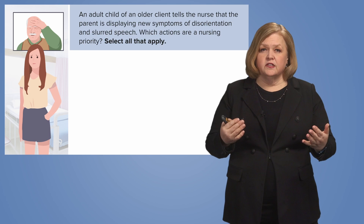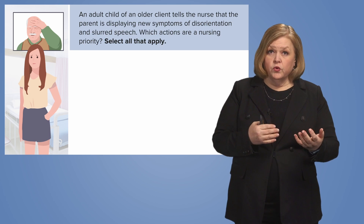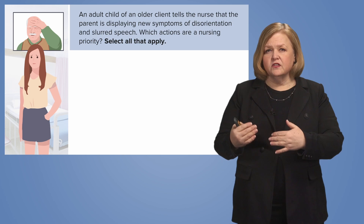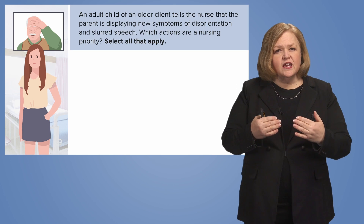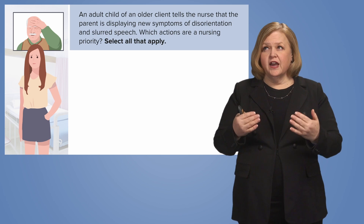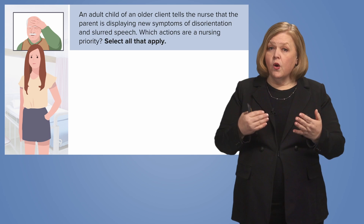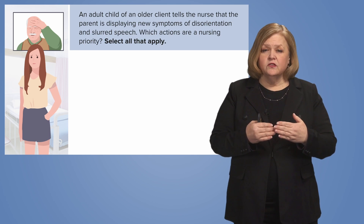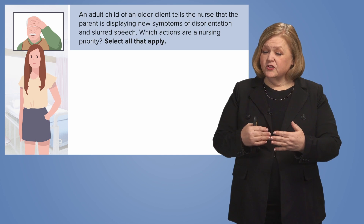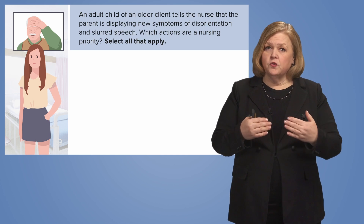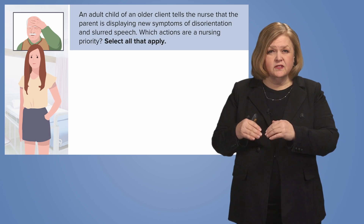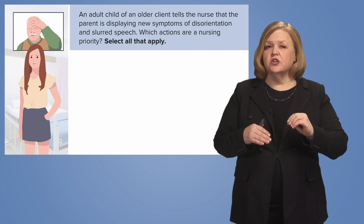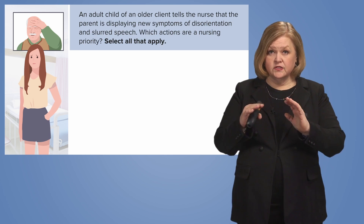The adult child says the parent has just started displaying disorientation and slurred speech. Those terms are considered assessments — we assess whether someone is oriented, and we listen to their speech to see if it's clear. Anytime you see an assessment in a question, ask yourself: is that normal or abnormal? Disorientation is not normal. Slurred speech is not normal. And we know it's not normal for this client because the adult child told us they have just started displaying these two assessments.